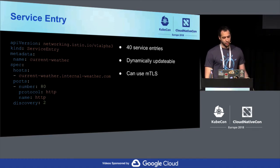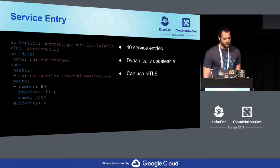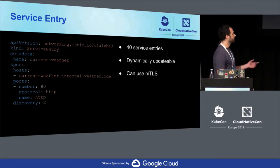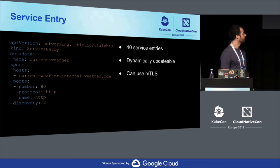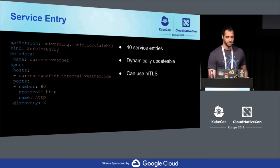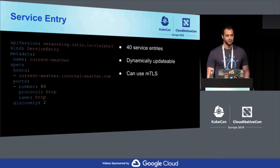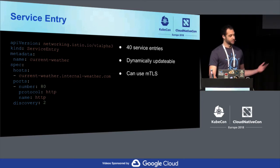What we do is add an endpoint — for example, currentweather.internalweather.com — and now Istio knows about it, knows how to route to it, and treats it similarly to something in the mesh. We just define a port. Currently we have 40 service entries. They're dynamically updatable, so if a team decides they want to change their backend endpoint, we can just update that in real time. You can also use MTLS — we haven't used it yet but it is available.